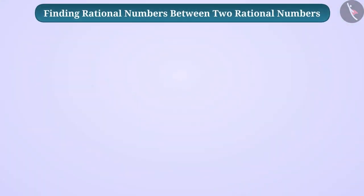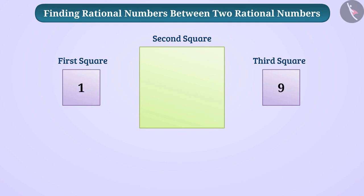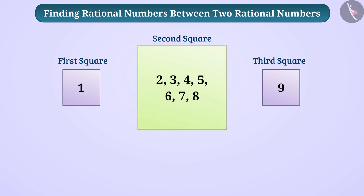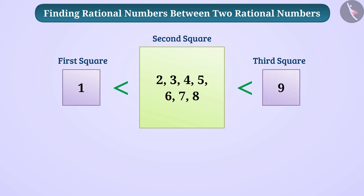Let's play a game. In this game we will take three squares. Only one number can be written in the first and third square, whereas in the middle square many numbers can be written. The rule of this game is only those numbers can be written in the middle box whose value is more than the number written in the first square but lesser than the number written in the third square.